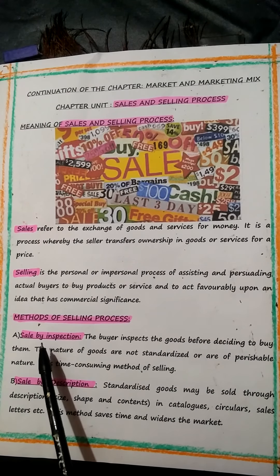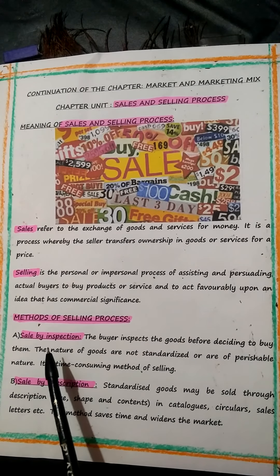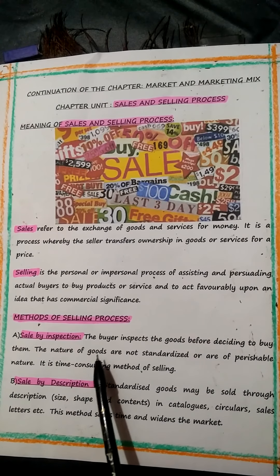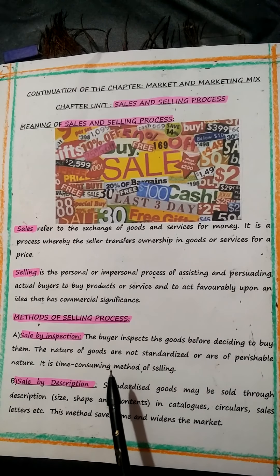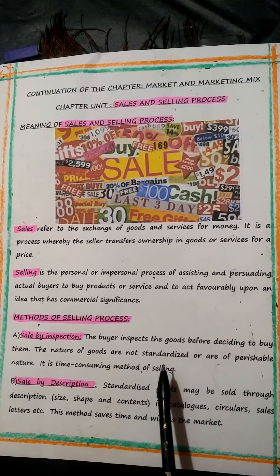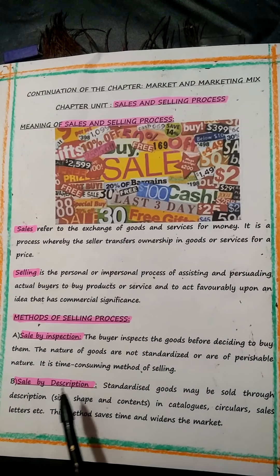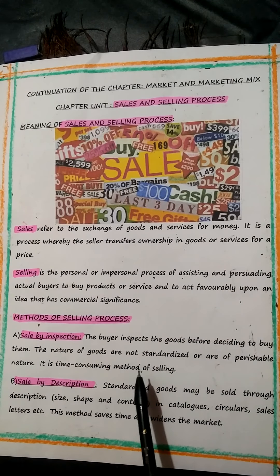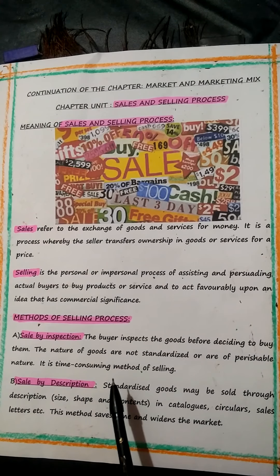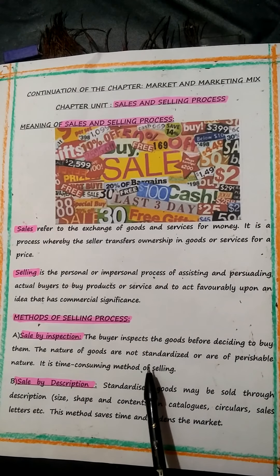We will take up the first one: sale by inspection. The word inspection means checking something, examining something, assessing something. Here, the buyer inspects the goods before deciding to buy them. You should not be a fool after you buy — before you buy, you think and buy. The nature of these goods are not standardized; these are not meant for branded goods but for non-standardized goods or goods of a perishable nature. It is a time-consuming method of selling because the buyer has to identify existing and potential dangers and hazards — it is an important stage in the buying process.